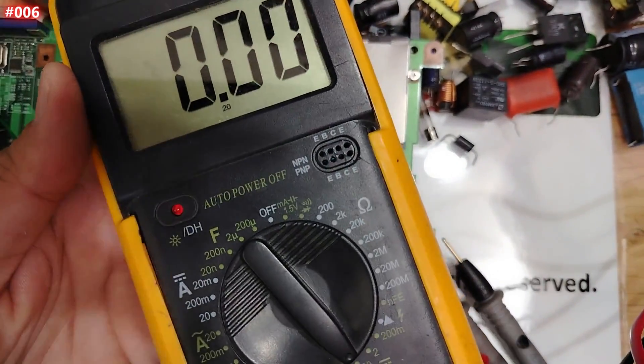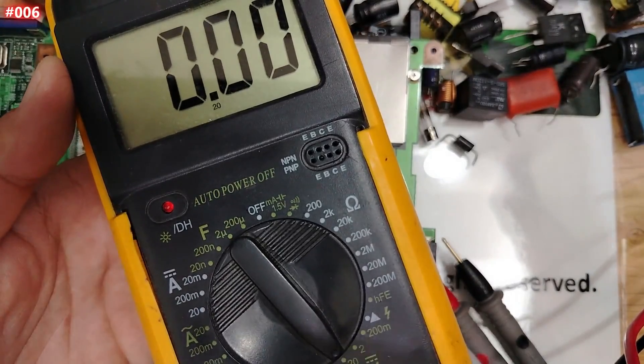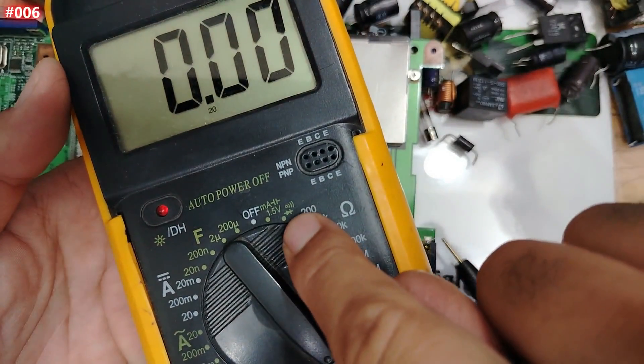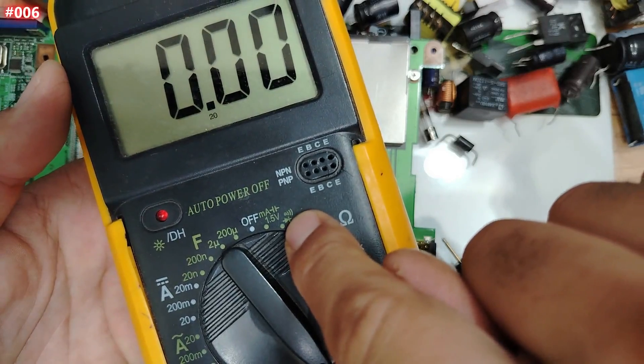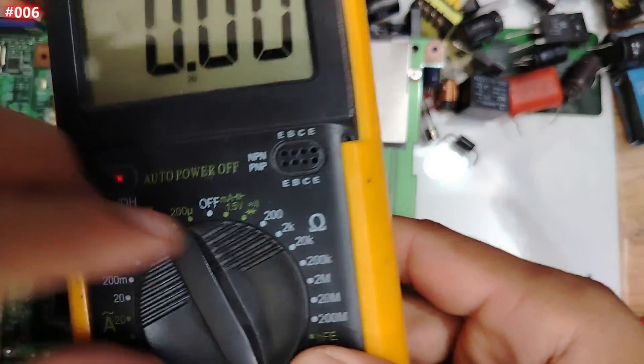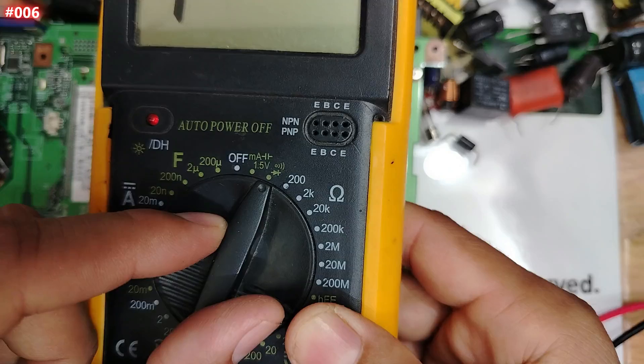So guys, of course, to test the MOSFETs in general, we have to select the diode option. Why? Because the MOSFET contains a diode inside it. So let's select the diode option like this, my friend.